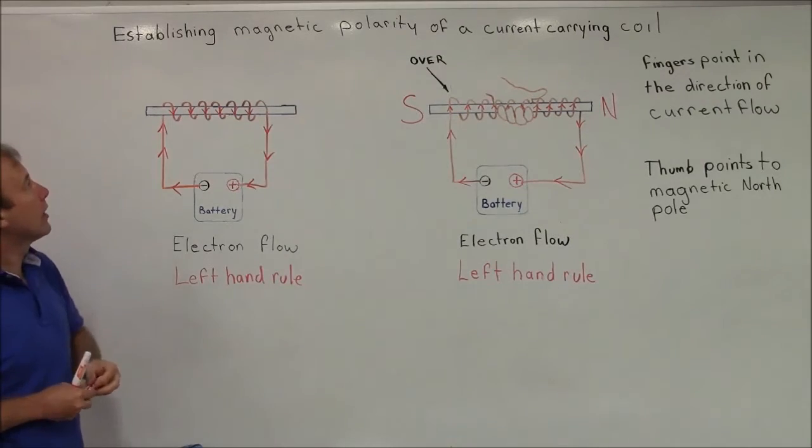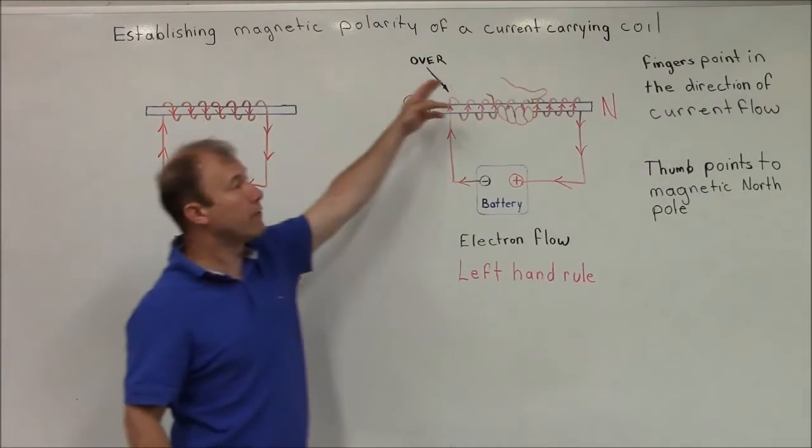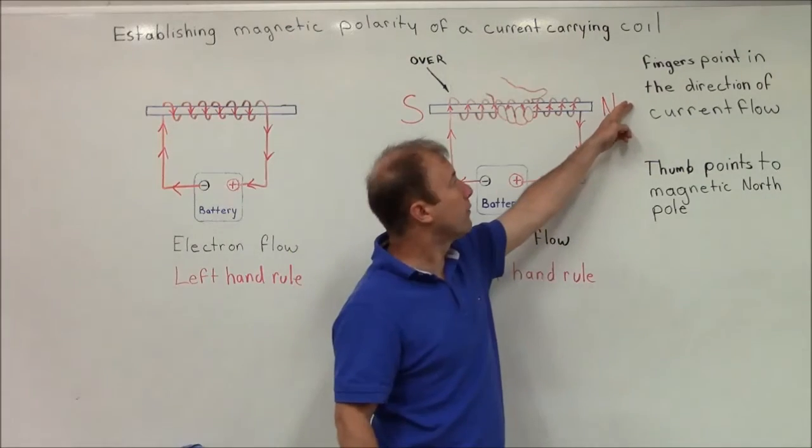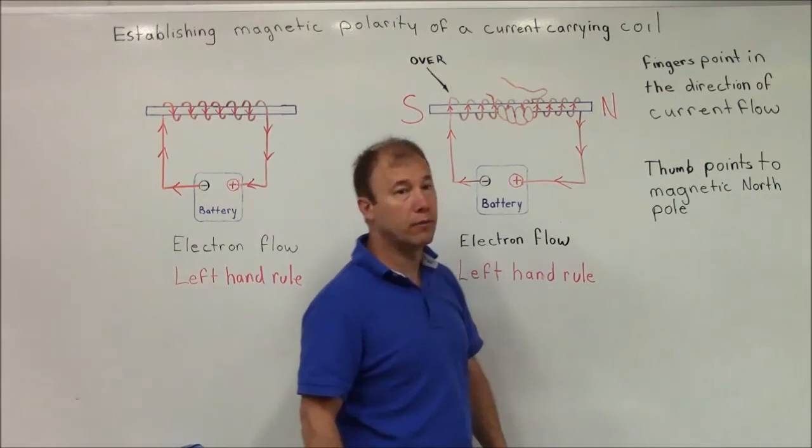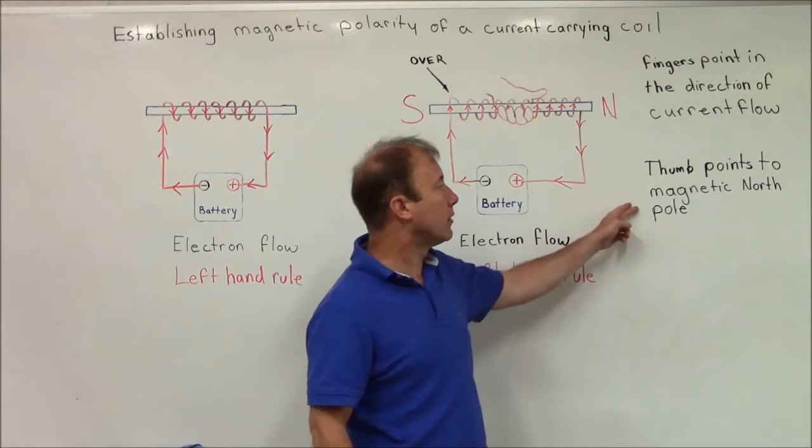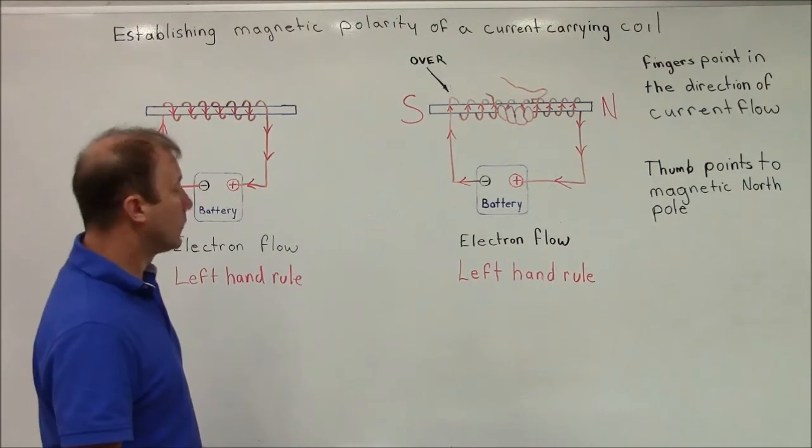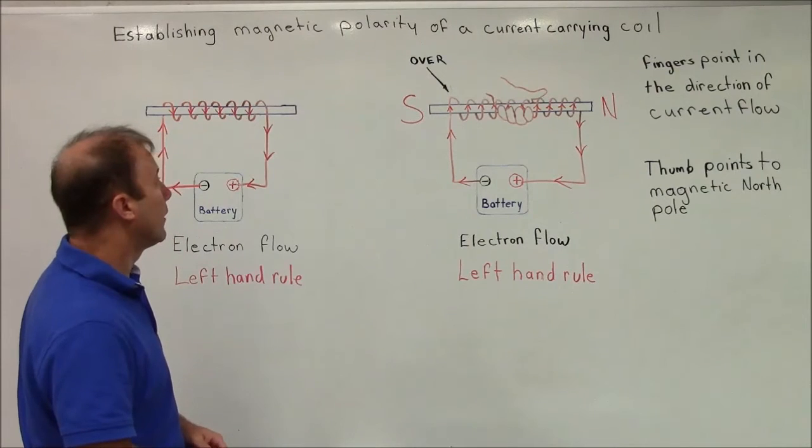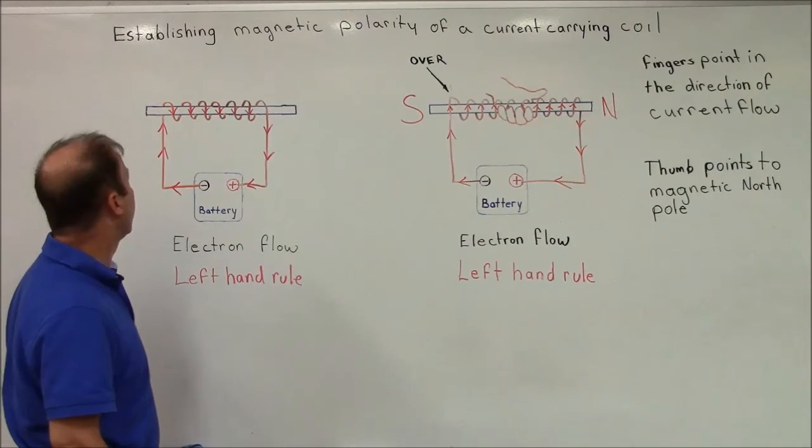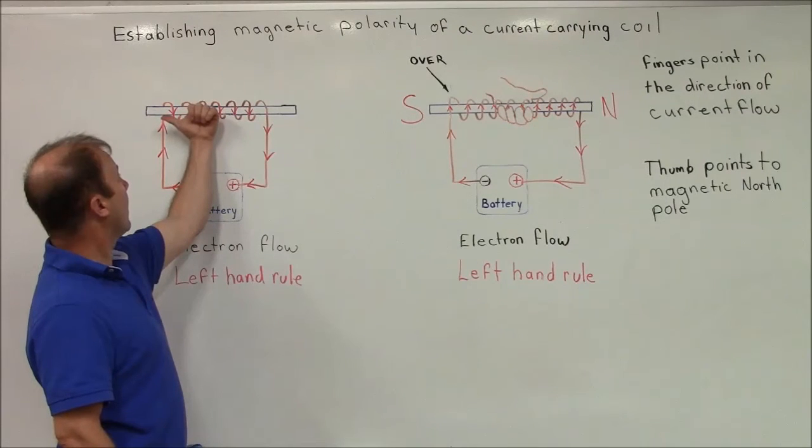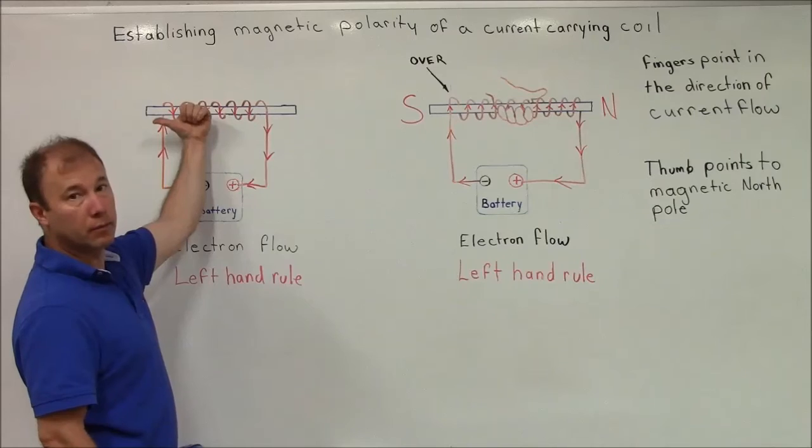So we want to establish the magnetic polarity of a current-carrying coil. So the two techniques: fingers point in the direction of the current flow, and thumb points in the magnetic north pole. All right? So, fingers point in the direction of current flow. Using left-hand rule, like that, comes around, and thumb points in magnetic north.